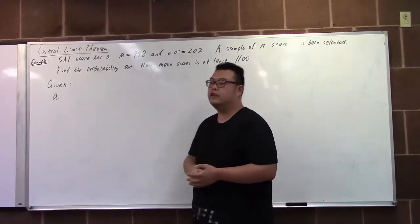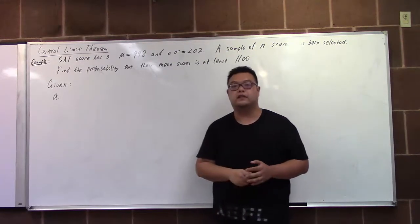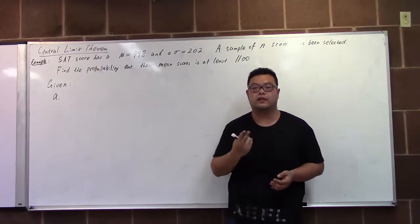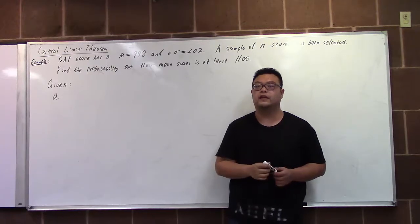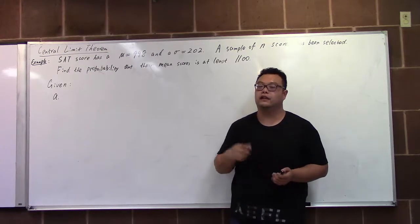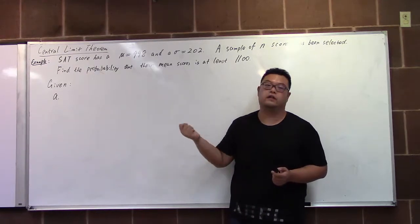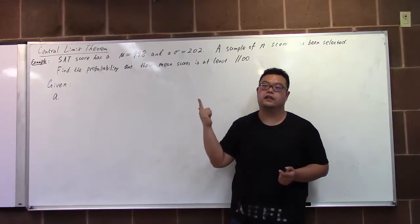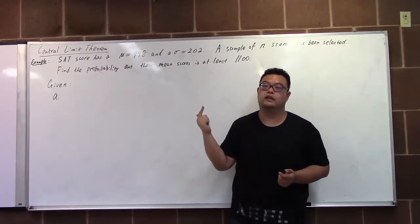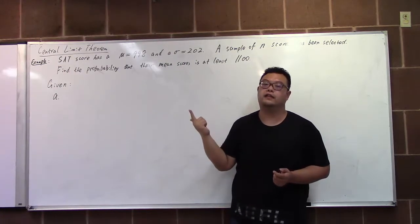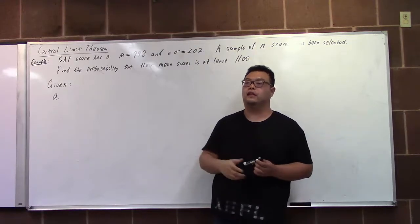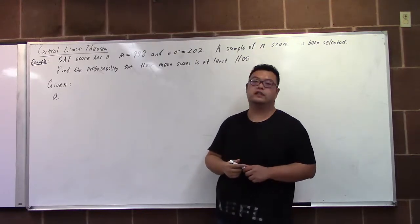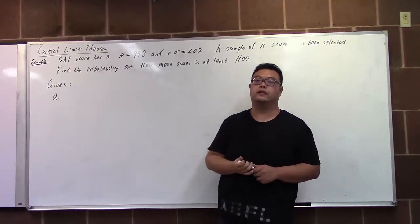The criteria of the Central Limit Theorem — two things need to be clear: the distribution of the population and the sample size n. Based on that, we may or may not be able to follow the Central Limit Theorem.